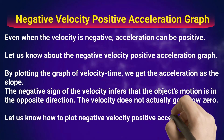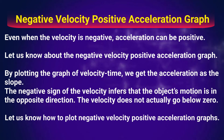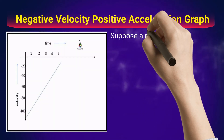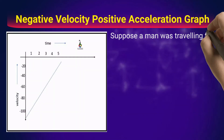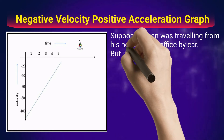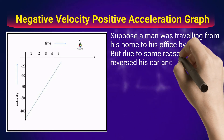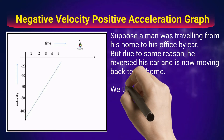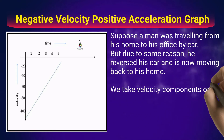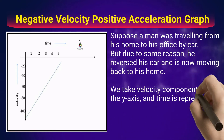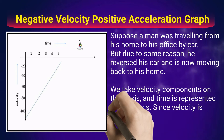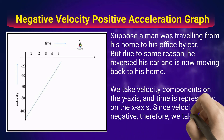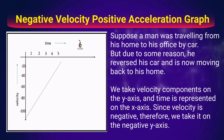To understand how to plot negative velocity positive acceleration graphs, suppose a man was traveling from his home to his office by car. But due to some reason he reversed his car and is now moving back to his home. We take velocity components on the y-axis and time is represented on the x-axis.